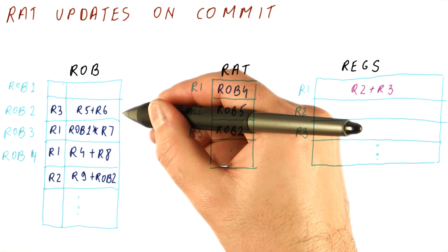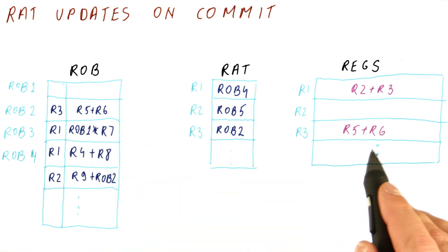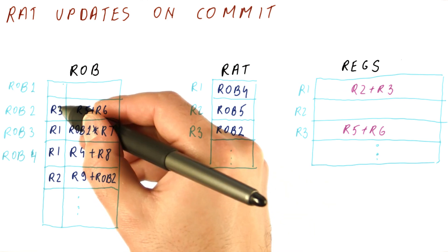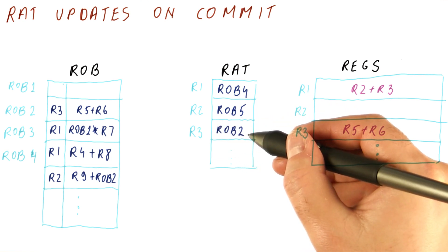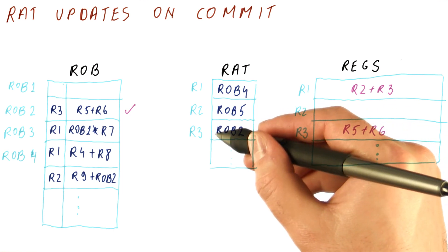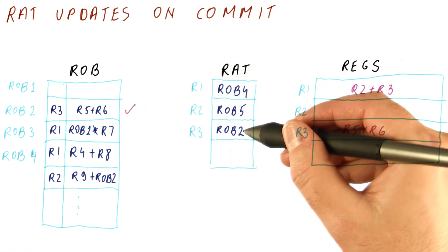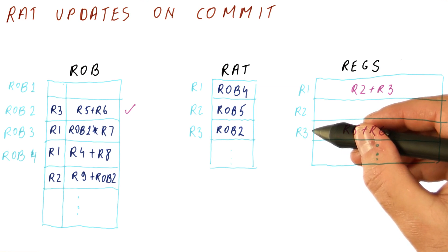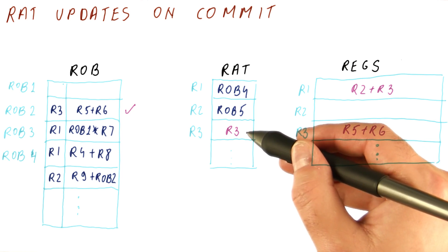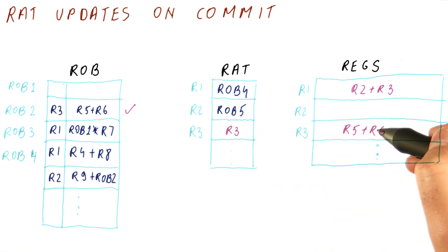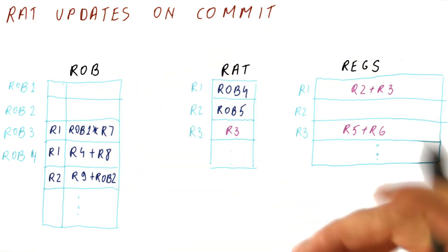Now we commit ROB2. Again, it needs to write the result to R3. We take the result of the instruction and write it to the registers regardless of what the RAT says. But then we look at the RAT entry for R3 and check whether we are the latest rename — and in this case, we are. So we change the RAT to now point back to the registers for R3. After doing this, we can fully commit this instruction and free this ROB entry.